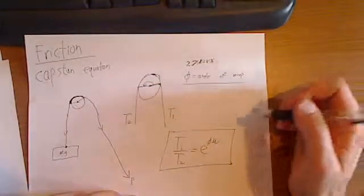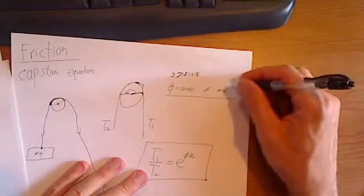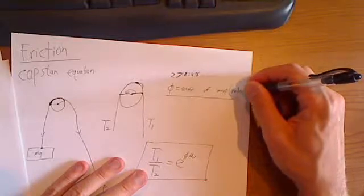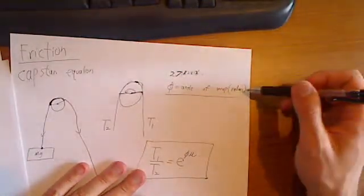Mu is the coefficient of friction that we're used to. One note, angle of wrap must be measured in radians. If you measure in degrees, you will get something incredibly wrong.